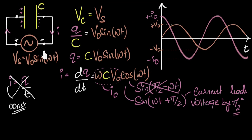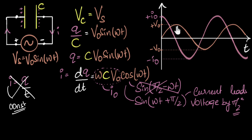The moral of the story is: for a pure capacitive circuit, we can use the capacitor equation, and once you get the equation for the charge, you differentiate it to get the current. What we find is that the current leads the voltage in its oscillations by a phase angle of π/2. I'm sure you'll be curious to understand why the current leads the voltage — what's going on logically. We're going to explore all of those things in a future video.